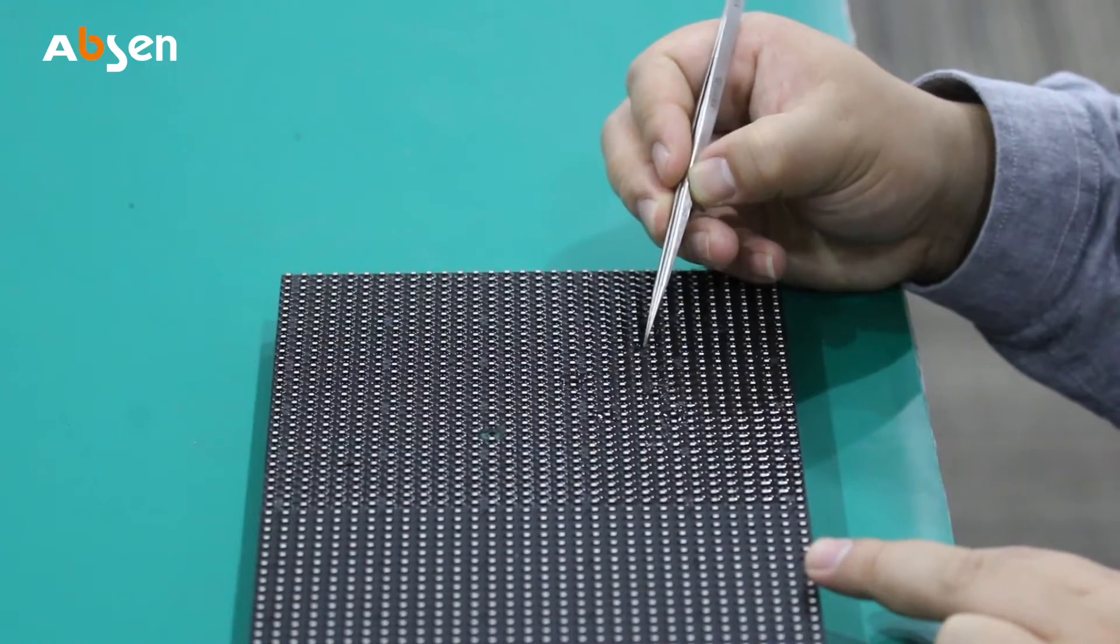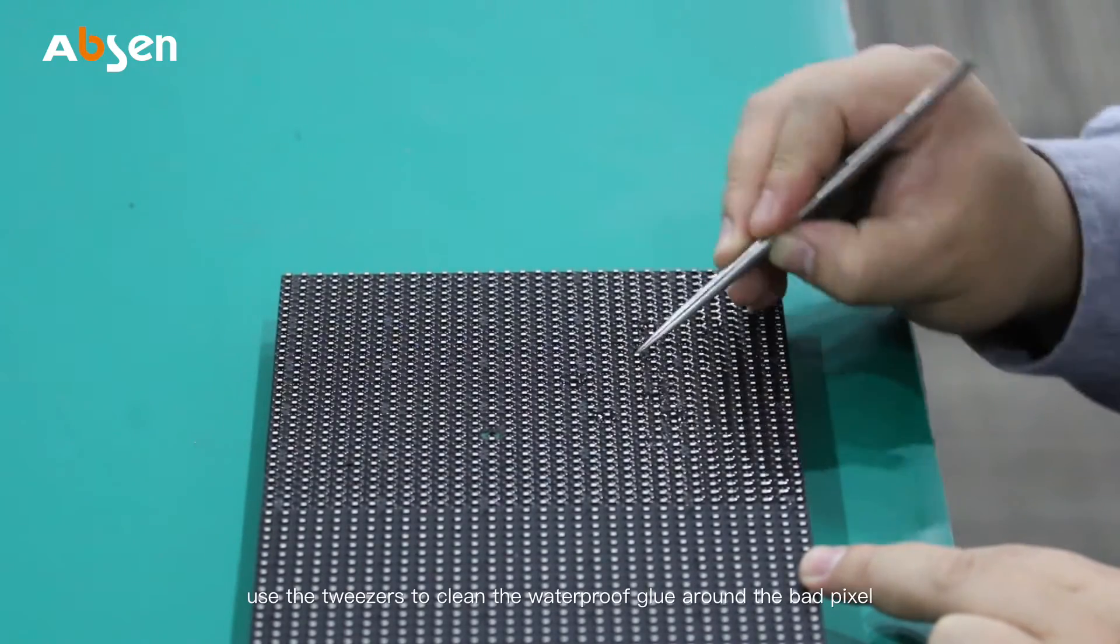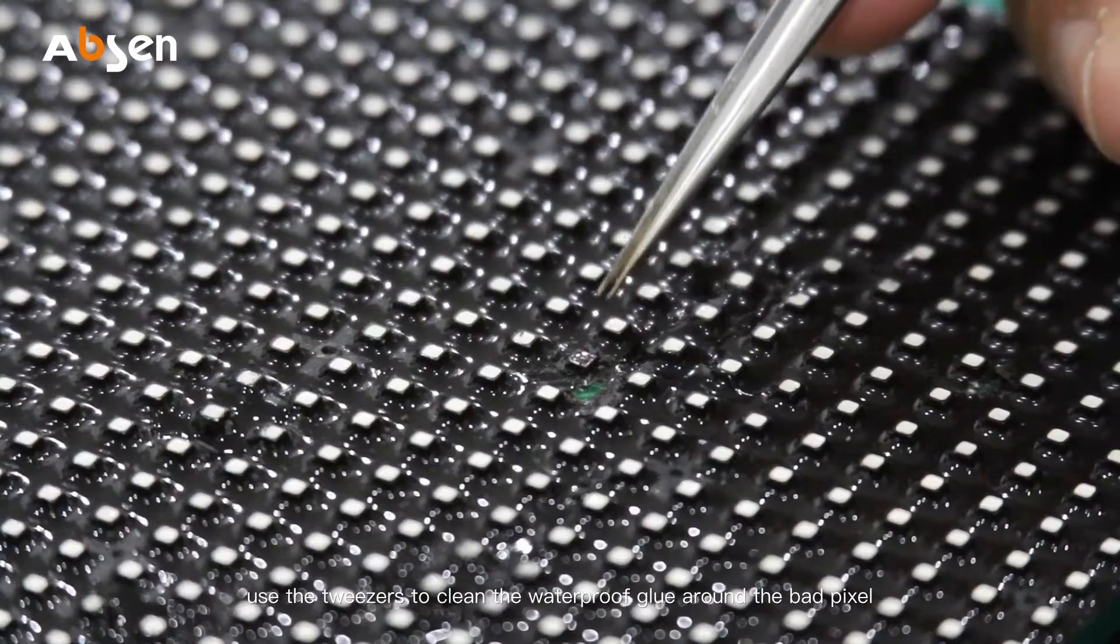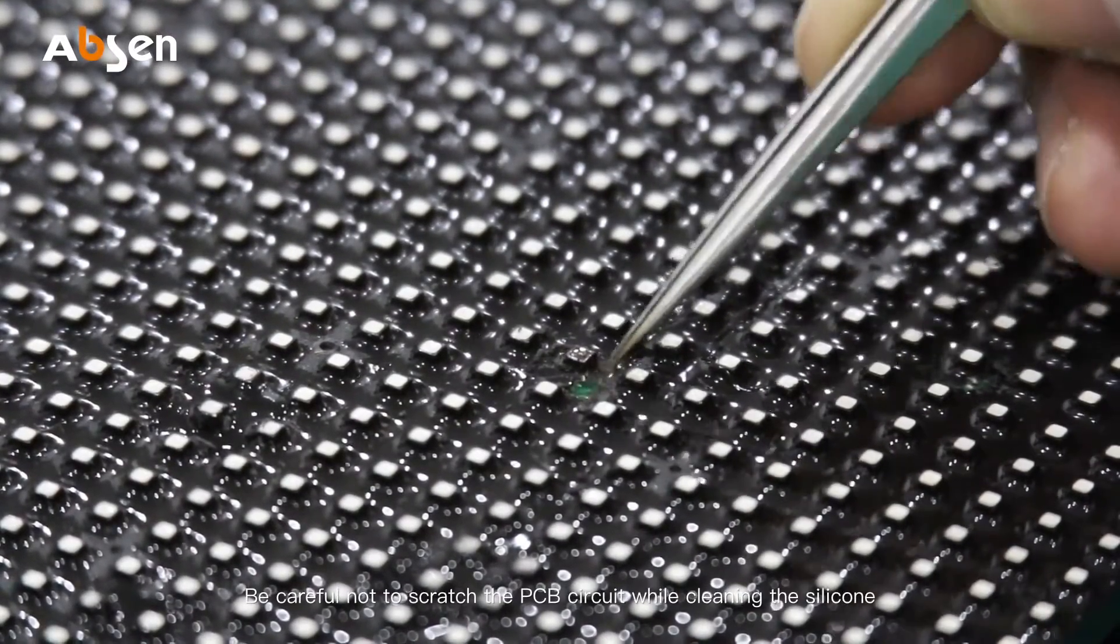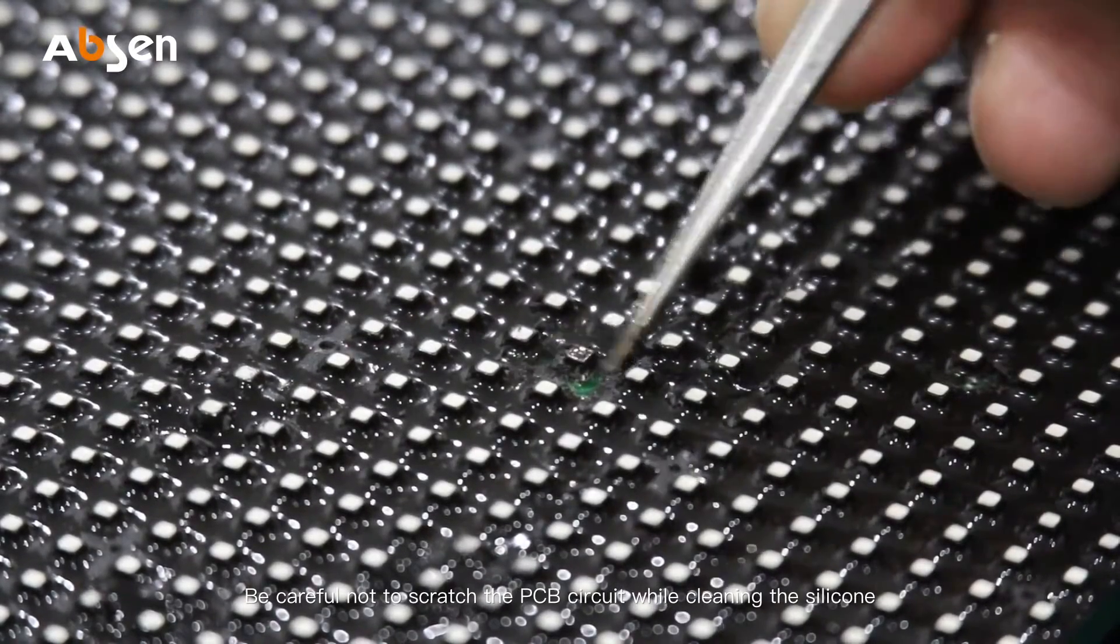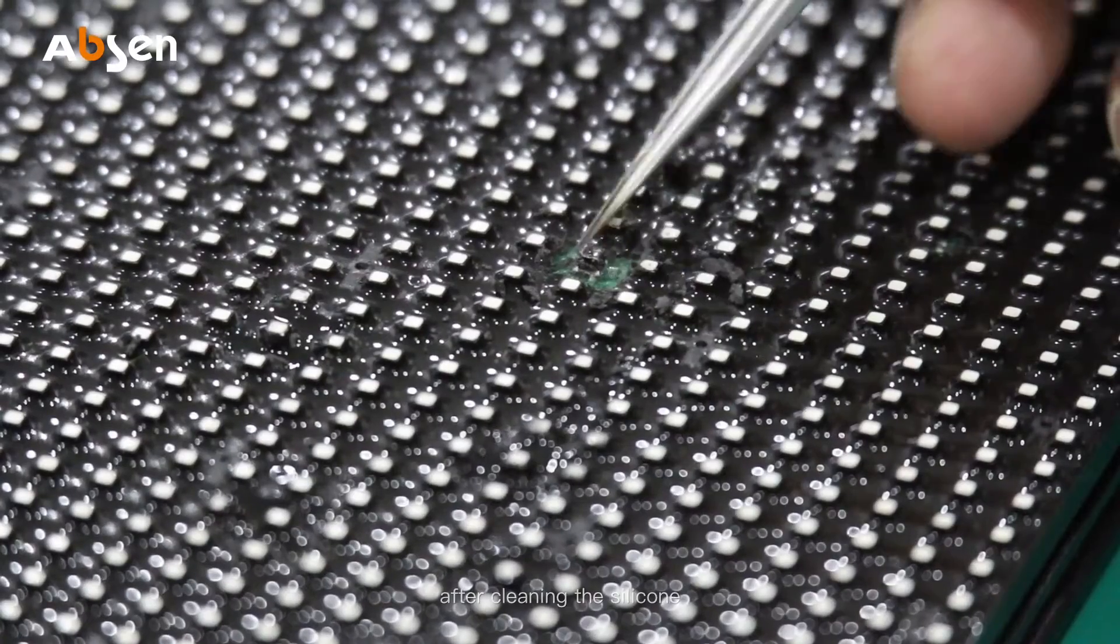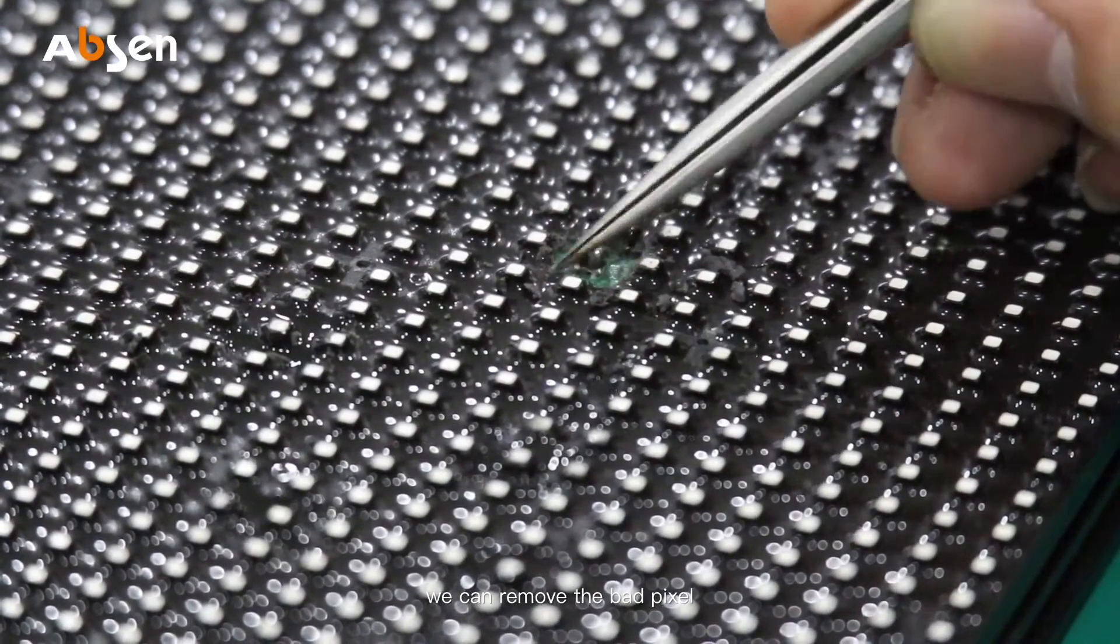After removing the mask, use the tweezers to clean the waterproof glue around the bad pixel. Be careful not to scratch the PCB circuit while cleaning the silicone. After cleaning the silicone, we can remove the bad pixel.